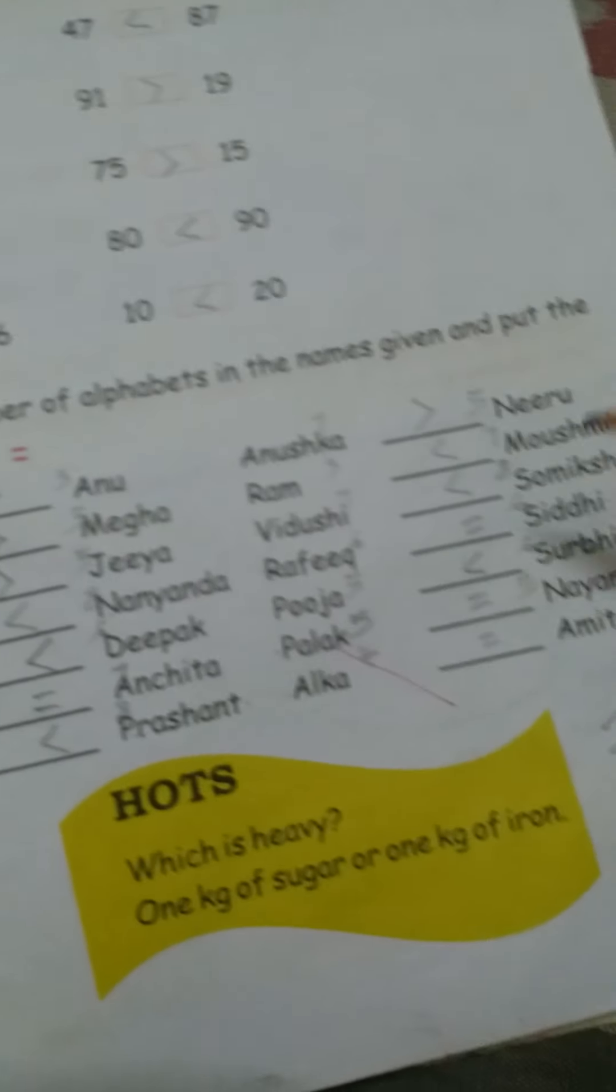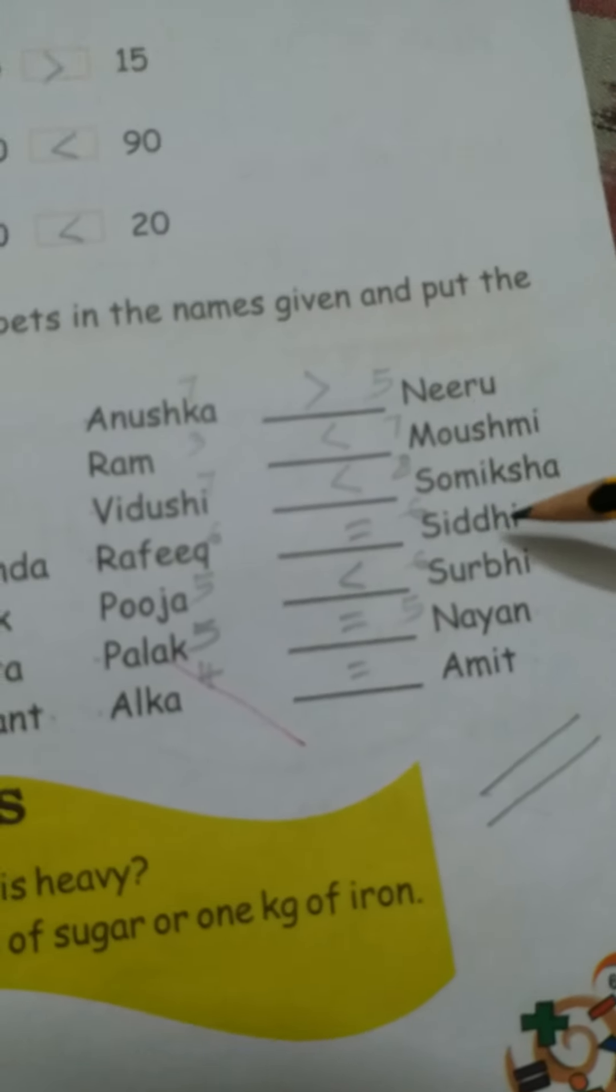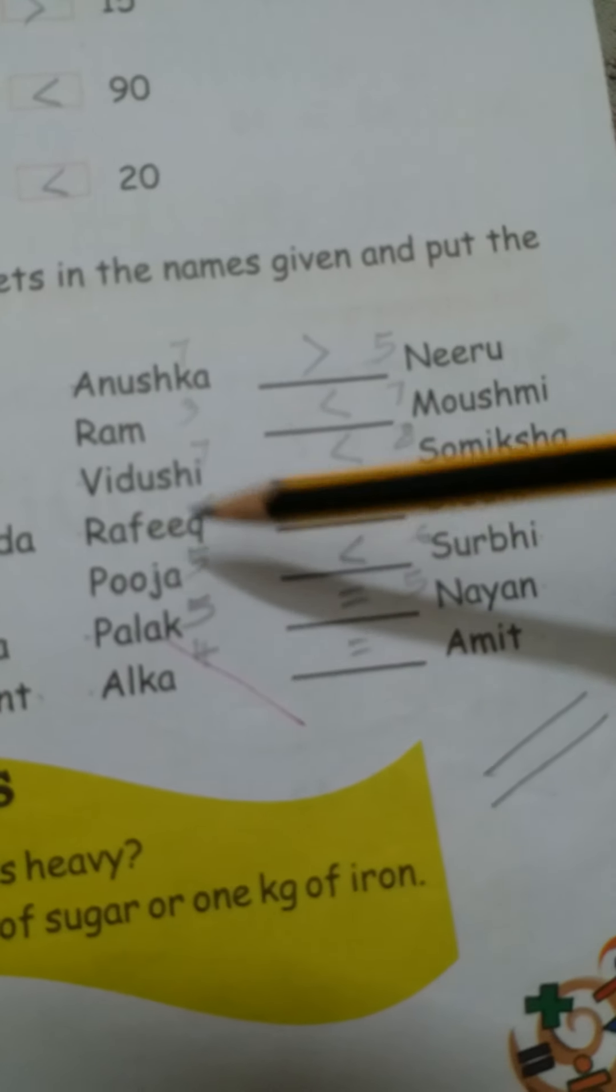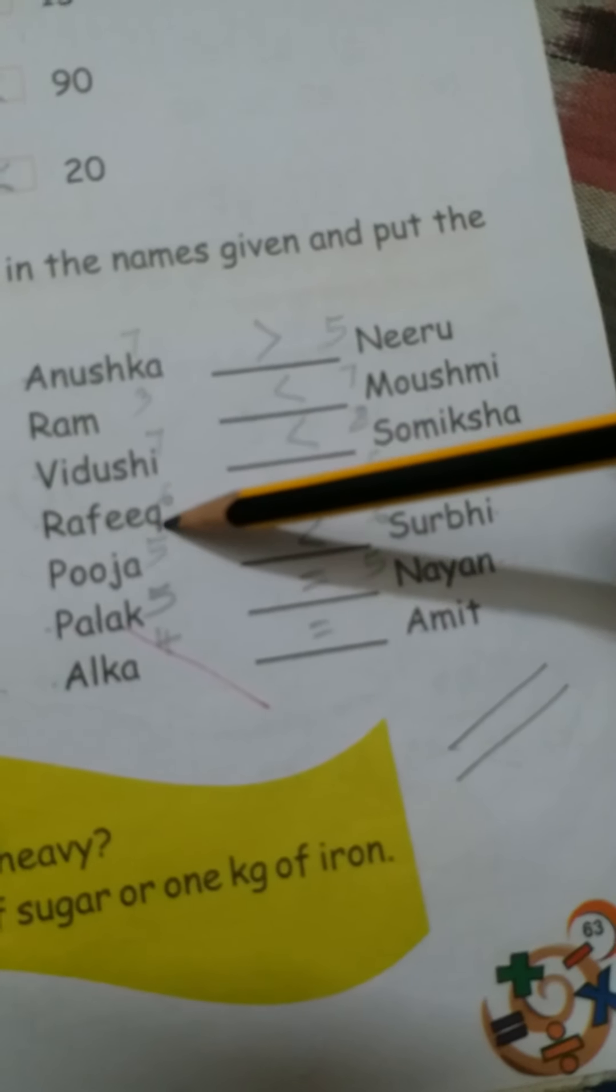Another, see, yes, this one, see. Rafik and Shiddhi. Rafik how many alphabet, 1, 2, 3, 4, 5, 6, 6 alphabet.